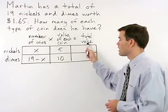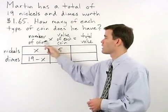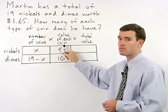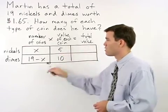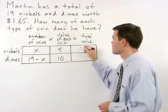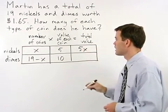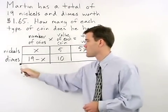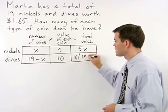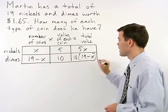Our total value, based on our formula, is going to come from the first column times the second column. So the total value of our nickels is x times 5 or 5x, and the total value of our dimes is 19 minus x times 10, or 10 times the quantity 19 minus x.